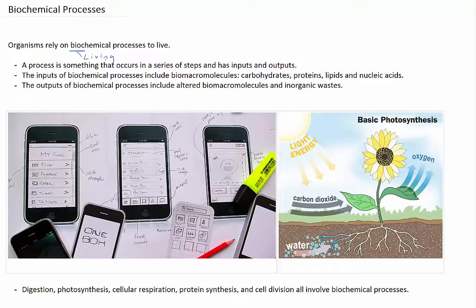A process is something that occurs in a series of steps and has inputs and outputs. For example, you could consider the manufacturing of a smartphone as a process. The steps would include its design, manufacturing, marketing, distribution, and finally being sold to the consumer. The inputs would be the electronics, glass, and plastic used to manufacture the phone, and the output would be the completed phone.